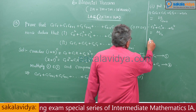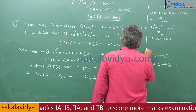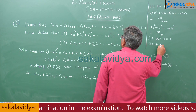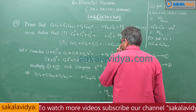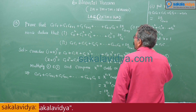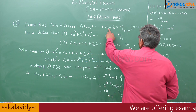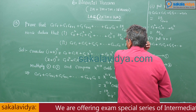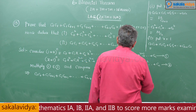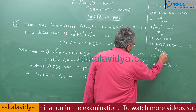For the second deduction, put r = 1. If you put r = 1, you get C₀C₁ + C₁C₂ + C₂C₃ + ... + Cₙ₋₁·Cₙ = 2nCₙ₊₁. That is proved.